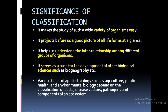For example, in biogeography you study the geographical distribution of plants and animals — you must have studied the vegetation of particular places and continents in geography. Various fields of applied biological science such as agriculture, public health, and environmental biology also depend on classification. We can classify groups of plants into pests, disease vectors, pathogens, or components of the ecosystem.